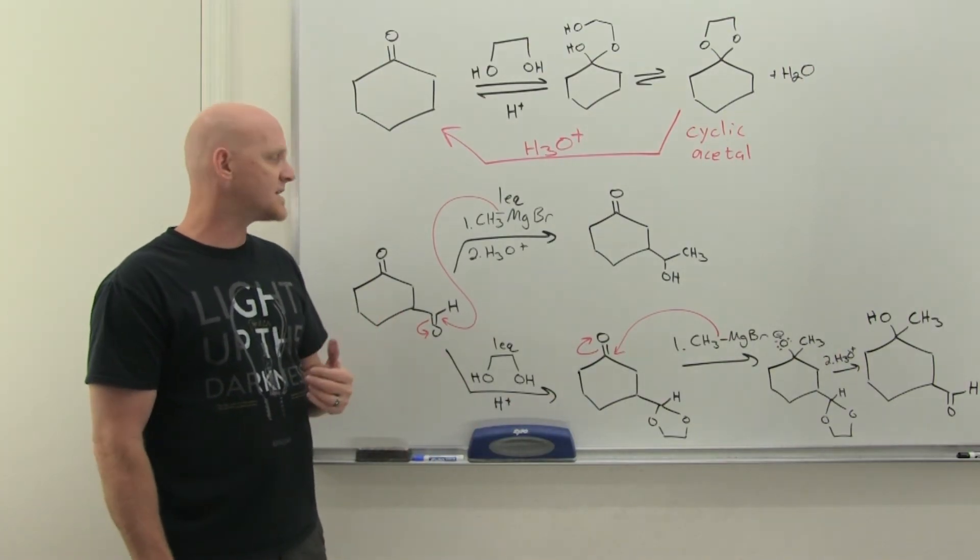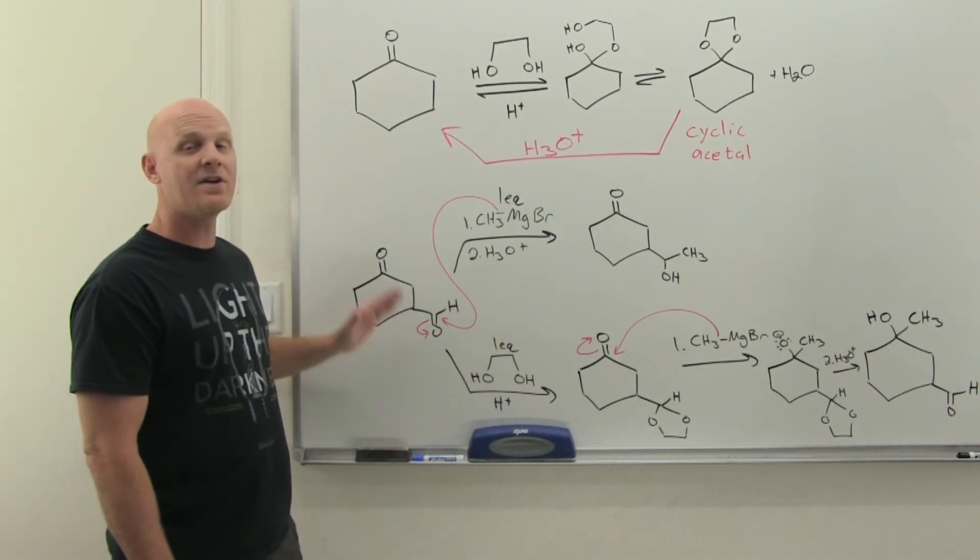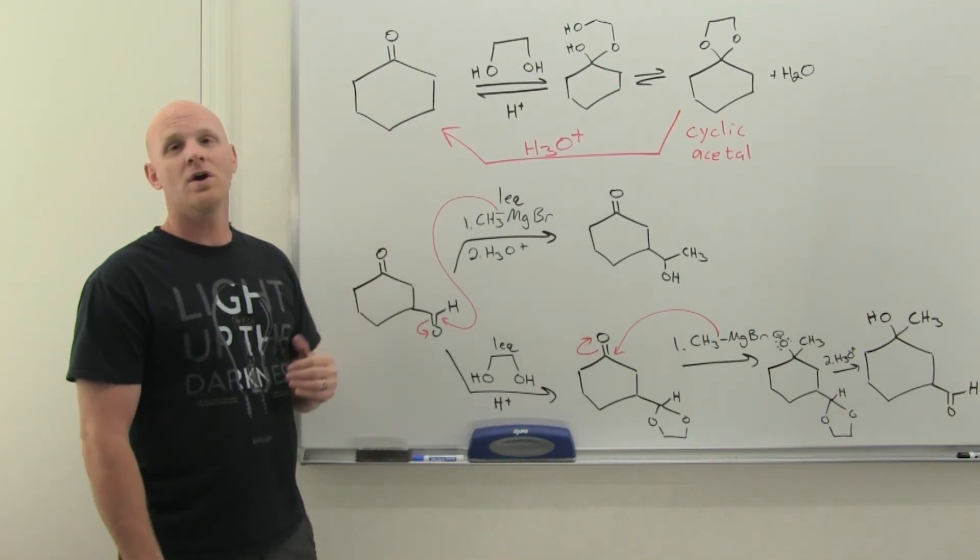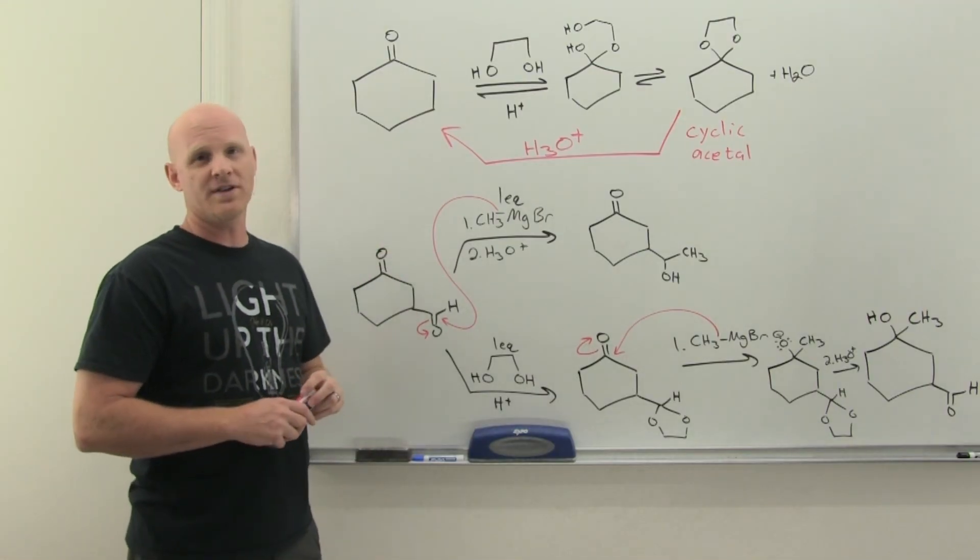And so this would be a very real case where you'd want to protect the aldehyde so that only the less reactive ketone gets to react. And typically we'll do this with a reaction with strong nucleophiles when you've got both a ketone and an aldehyde present, like a Grignard or an acetylide ion, something along those lines.